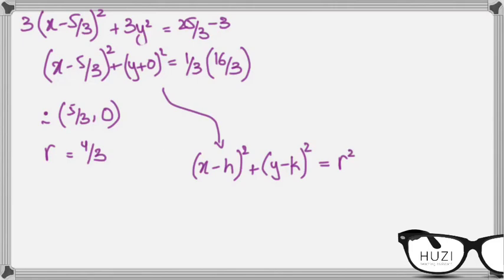So radius is 4 upon 3, and whatever the values, whatever the signs, you flip the signs to get your center of the circle. That's 5 upon 3 comma 0.